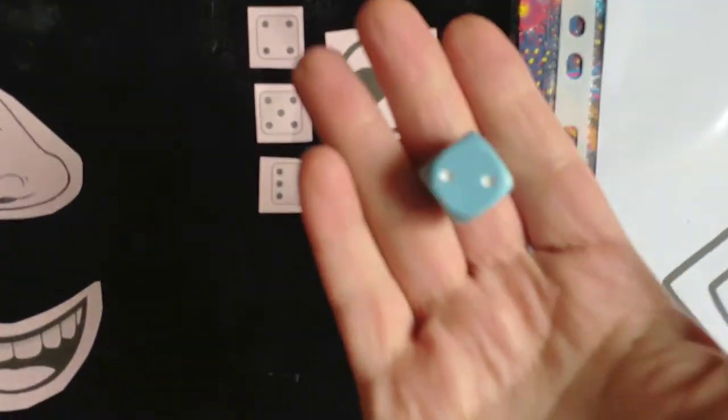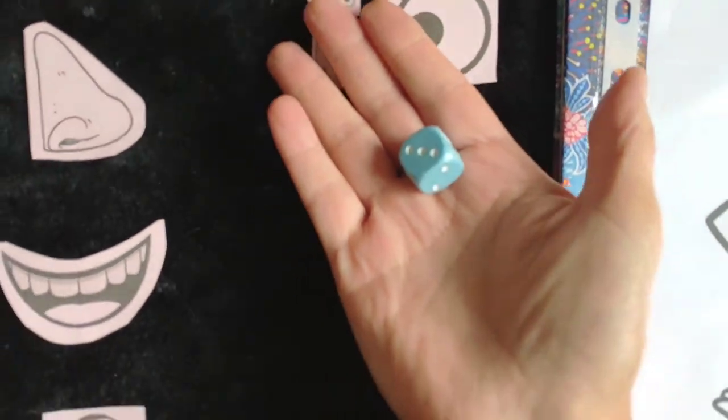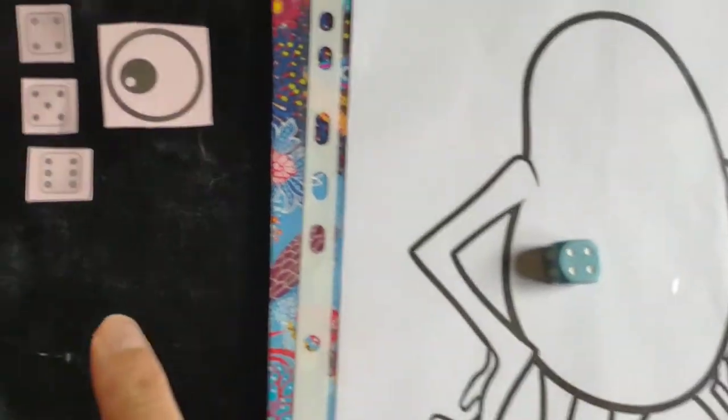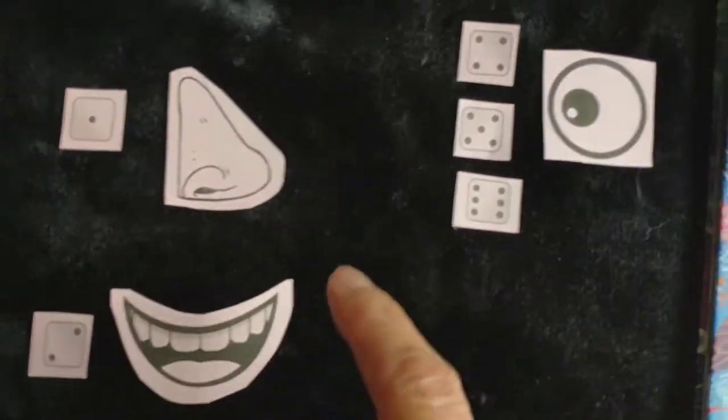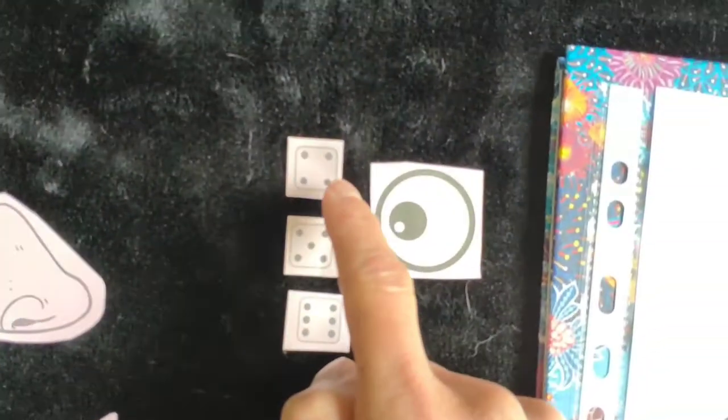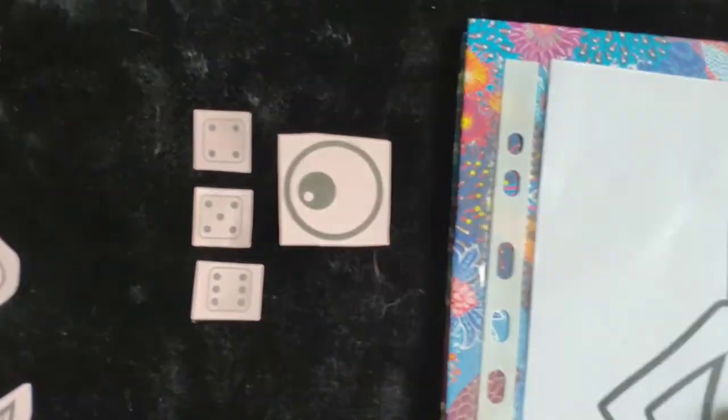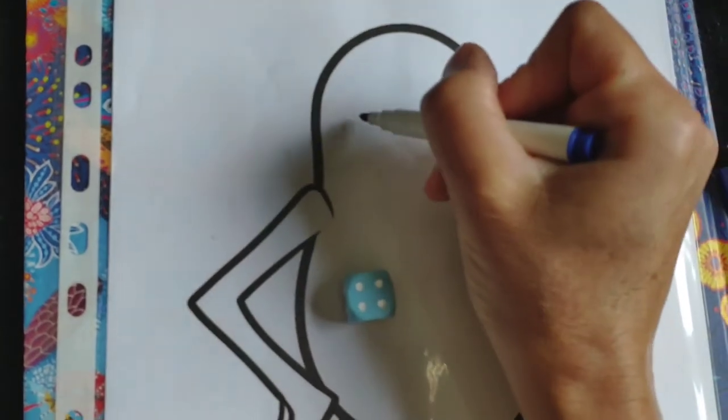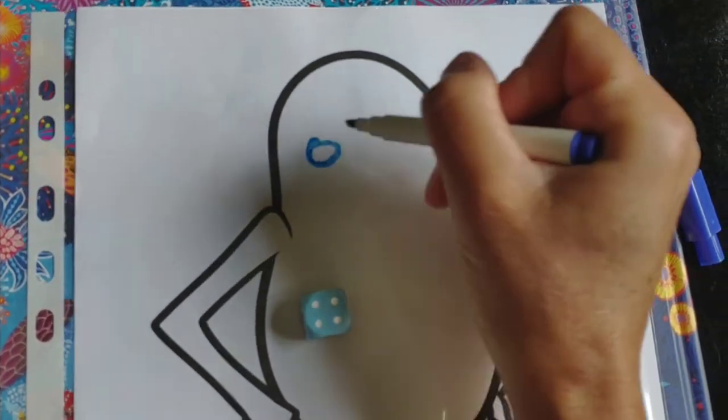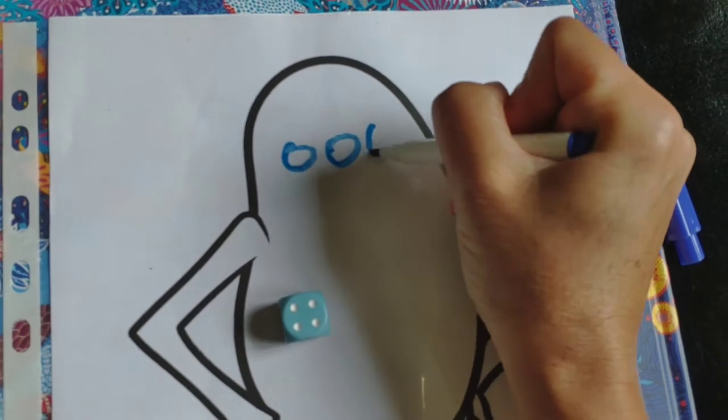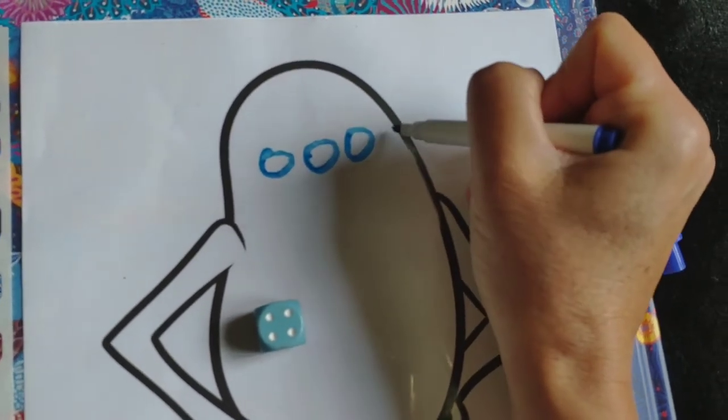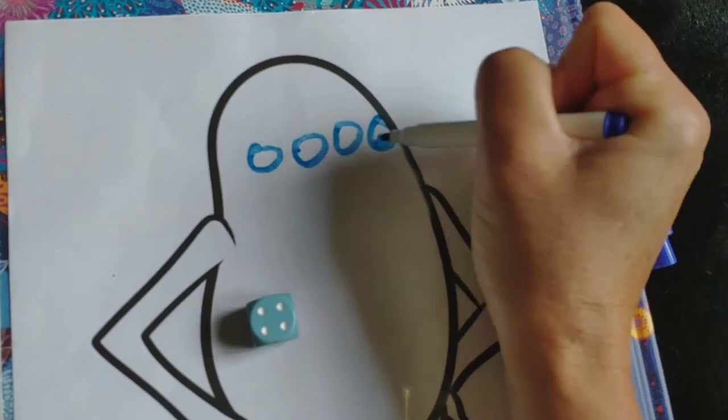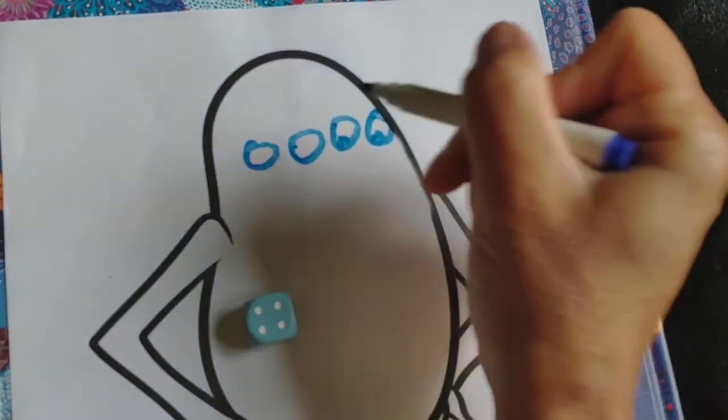Okay, let's start. Look. Let's roll the dice. Four. So four is four eyes. I've got to draw four eyes. One, two, three, four. Right, like this. Yes.